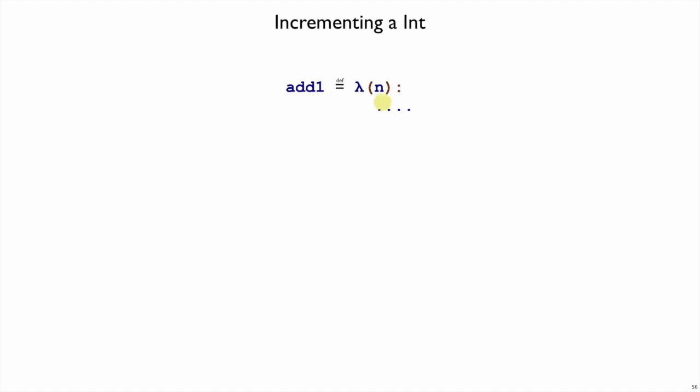In particular, since add1 is supposed to return a number, we know that it needs to return a function that takes an f and an x, and then does something with that f and x.